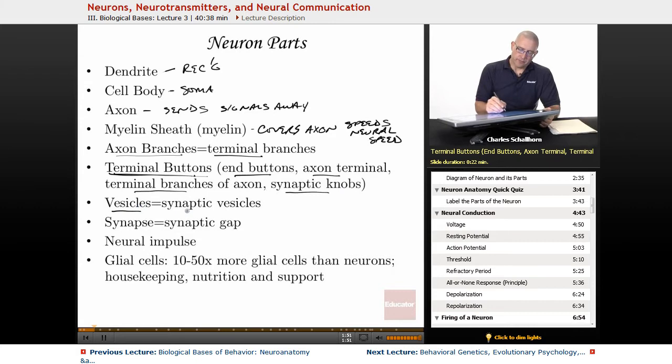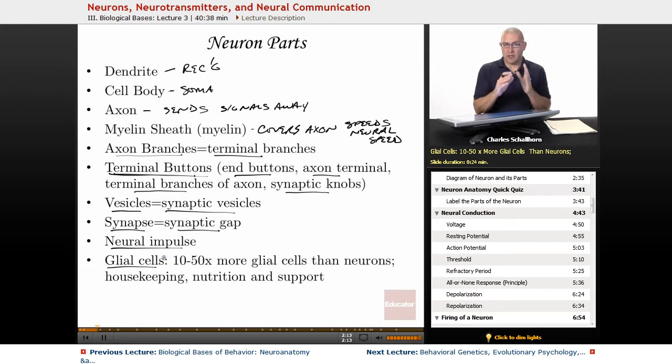There are vesicles, otherwise known as synaptic vesicles. They're right near the synapse. The synapse is sometimes called the synaptic gap. There is neural impulse, and that's going to be the way the electrical signal is moving within the neuron. And then there are glial cells. So you've got your neurons that are involved in the electrochemical part, but then there are the glial cells that are involved in housekeeping, nutrition, and support. So they're going to keep dead cells away. They're going to make sure there are nutrients going to the neurons and those sorts of things. And so the glial is, I think it's Latin for glue, and it kind of keeps the brain parts together.